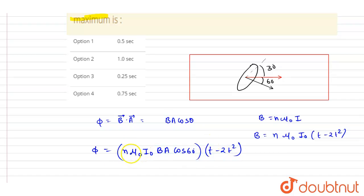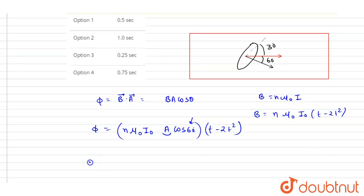μ₀nI is the magnetic field through the solenoid, and this is the area of this coil. 60 degrees is the angle. So let's differentiate this. If I call this constant C, so I will write it as C(1 - 4t) equals zero.